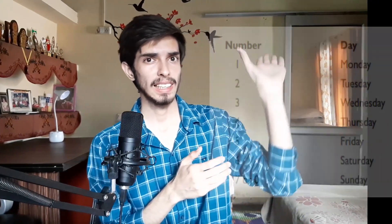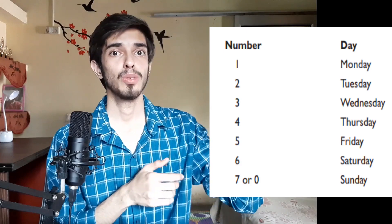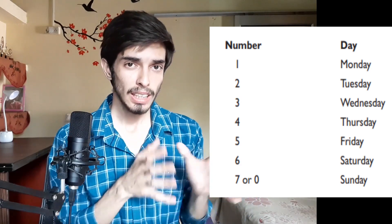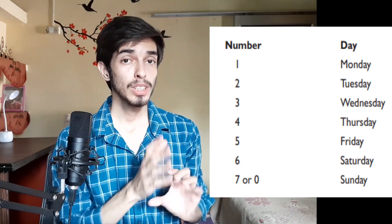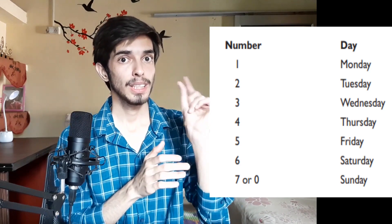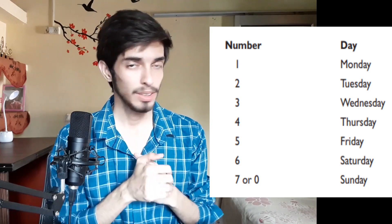We need to associate a number with the days of the week. It's pretty simple: 1 is for Monday, 2 is for Tuesday, and so on. The only thing you need to take care of is that both 7 and 0 are associated with Sunday.